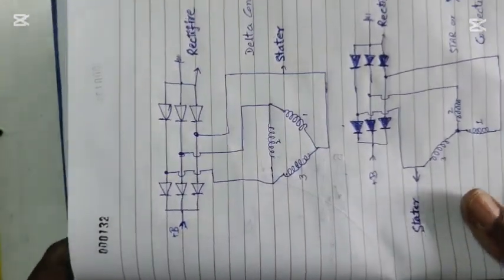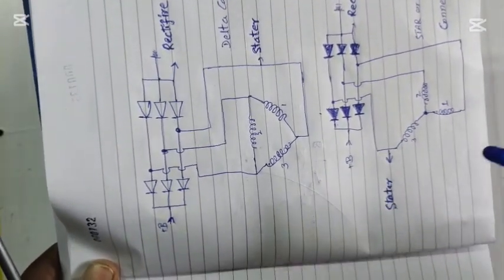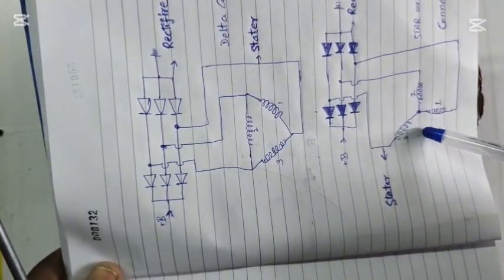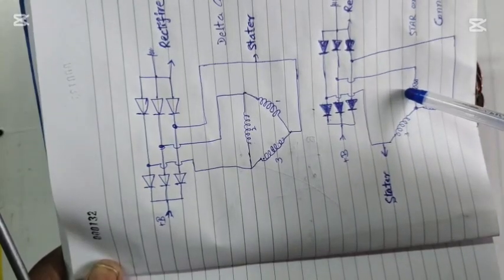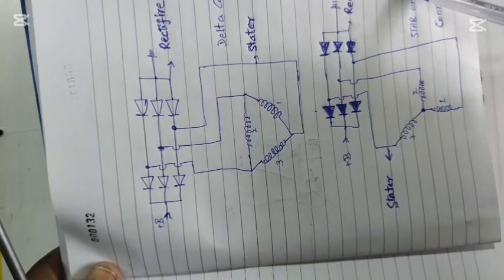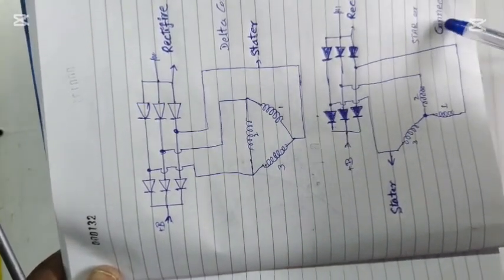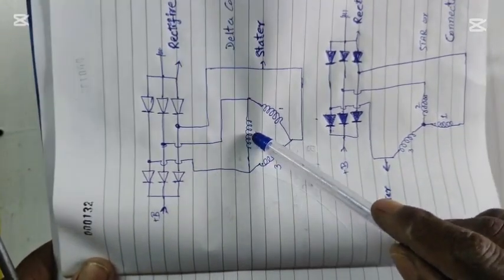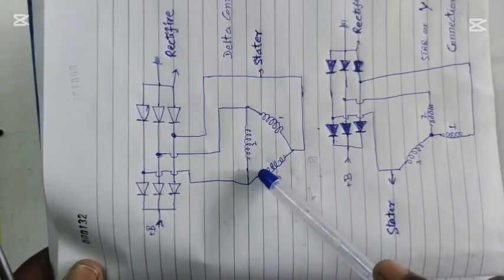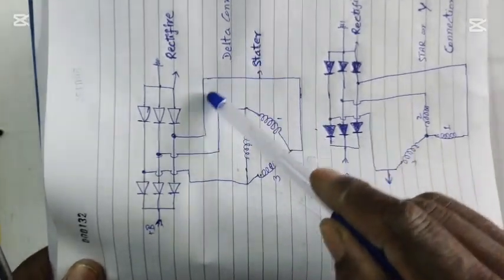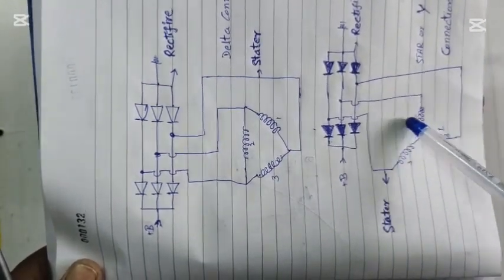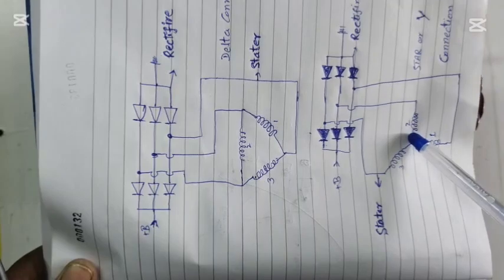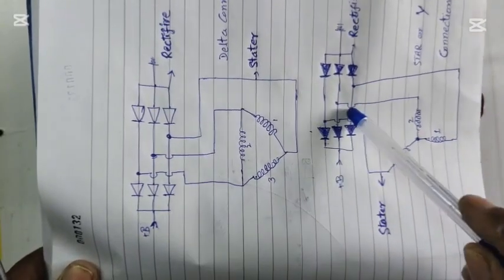I have made a drawing as you can see in front of you. This shows the rectifier. This one is the star connection — we call it a star or Y connection. In this star or Y configuration, all three windings have one end connected together at a common point, and the other ends go to the rectifier.